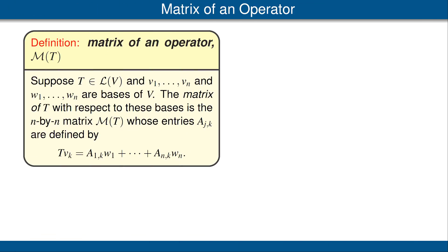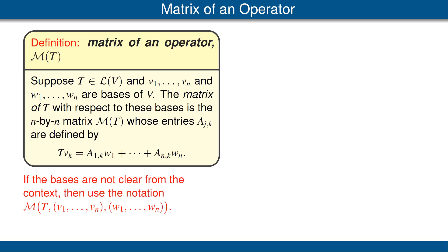In this video and in the next few videos, we will be making major use of the notion of the matrix of an operator. Suppose T is an operator on V, and we have two bases, V1 up to Vn and W1 up to Wn of V. The matrix of T with respect to these bases is the n by n matrix whose entries are defined by the equation shown here. If the bases are not clear from the context, we use the notation where we display them explicitly, but if it is clear from the context, we can just write M of T.